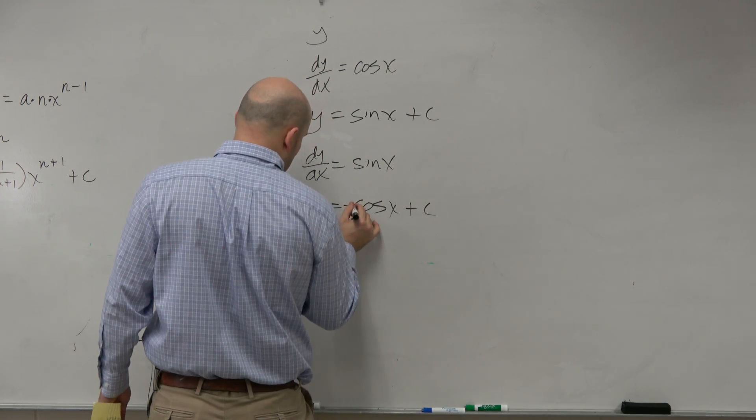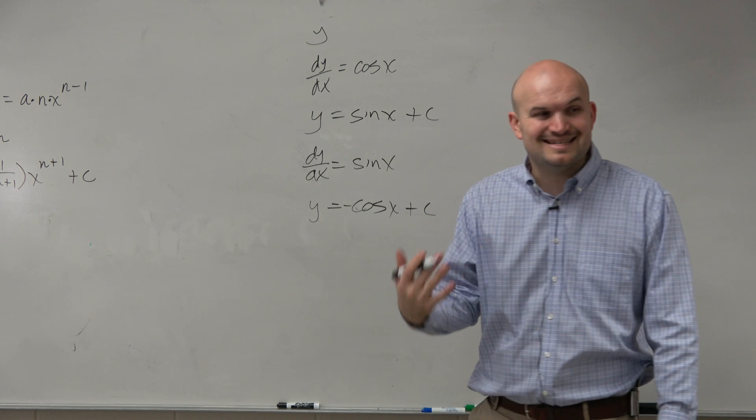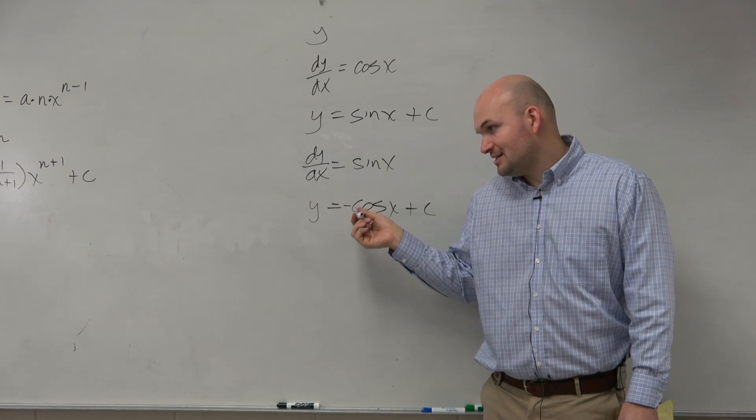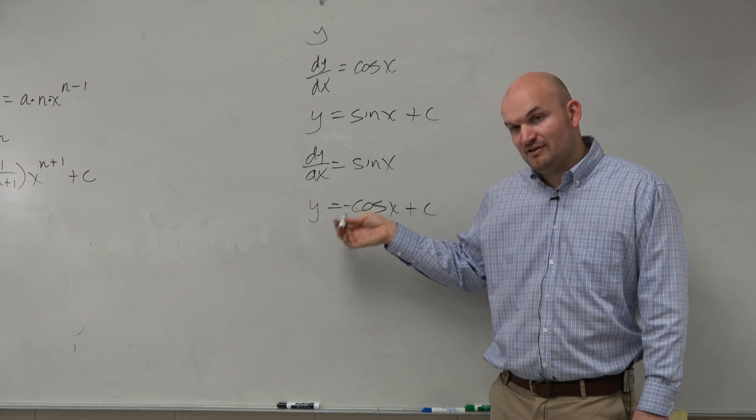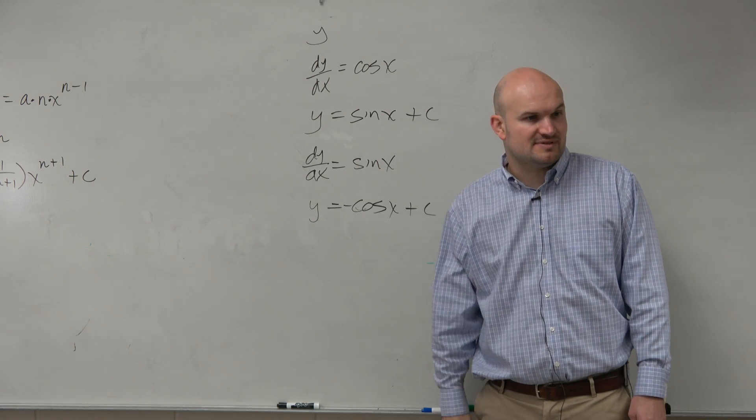However, all I got to do is just put a nice little negative there, because now I know that the derivative of negative cosine of x will give me a positive sine of x, right?